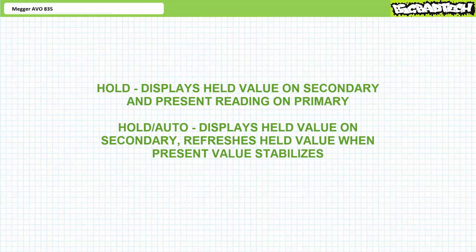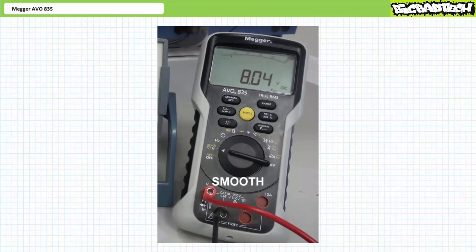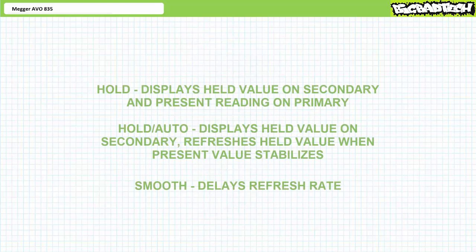The Smooth function simply slows down the display refresh rate. For example, this power supply is presently set at 8 volts. If I turn the dial back and forth a couple times and then ramp it up to 11.5 volts, the voltmeter in Smooth mode just sits back and lets me have my fun. After I settle down, the voltmeter takes another measurement and indicates voltage is presently at 11.5 volts. These related functions are great for rapidly changing systems when a user just needs a simple reading. As with other features, if you're in Hold, Hold Auto, or Smooth mode and want to get out of it, press and hold the same button that got you there to return to normal measurement mode.